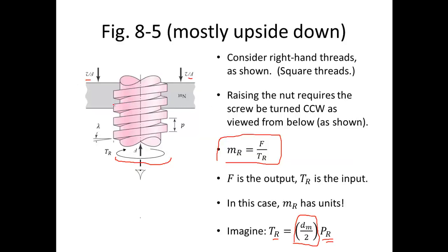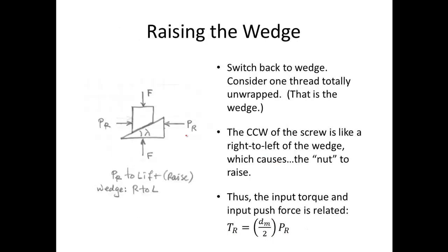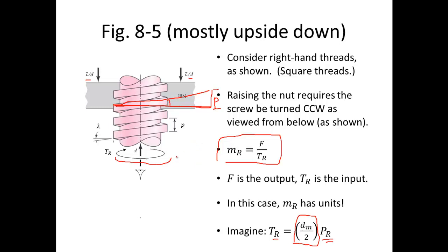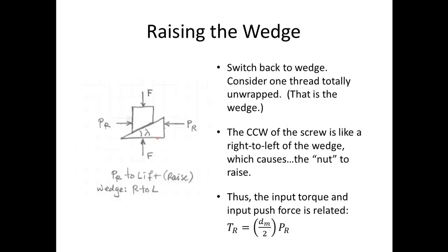Let's talk about how we get the wedge from the screw. Going back to the screw, we can take one thread and unwrap it. The lead angle is the pitch advance divided by the circumference, which is one thread fully unwrapped. So we take that one unwrapped thread and model it as a wedge. For raising the screw we're going counter-clockwise as viewed from the bottom — this is like going right to left on the wedge. So the counter-clockwise turning of the screw corresponds to going right to left on the wedge, and this causes the nut to raise.